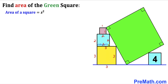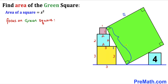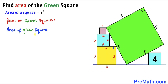Since the yellow square's side is 3 units and the blue square's side is 2, this remaining side length is 3 minus 2, which equals 1 unit. Now let's focus on the green square and label its side length as lowercase s on all four sides. Therefore the area of the green square equals s squared.